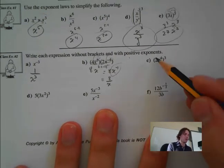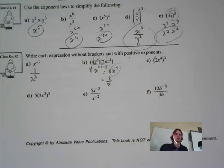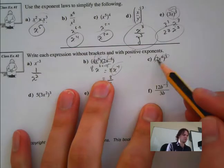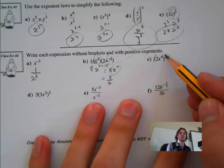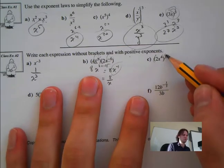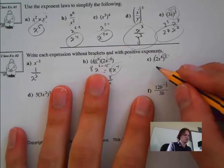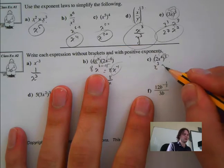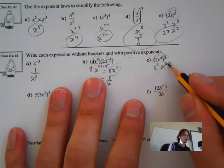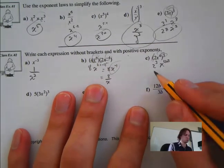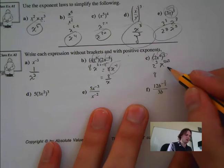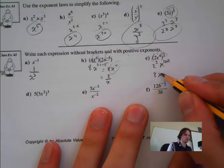Here we have brackets again. The exponent 3 on the outside is distributable into both. We get 2 to the 3 and x to the 4 times 3. Well, 2 to the power of 3 is 8, and 4 times 3 is 12, so we get 8x to the 12.